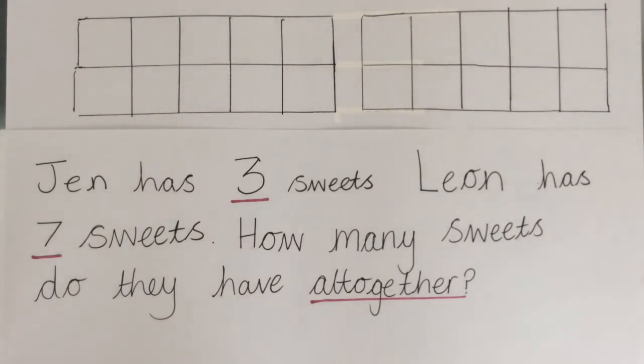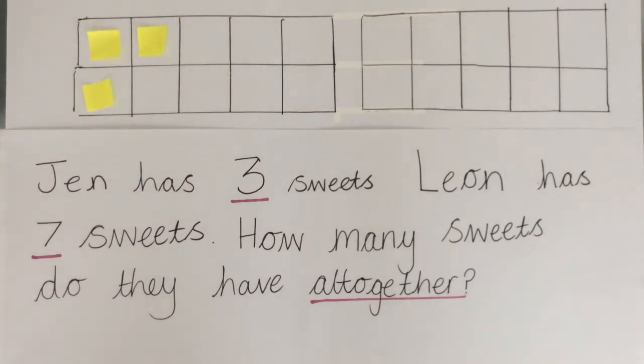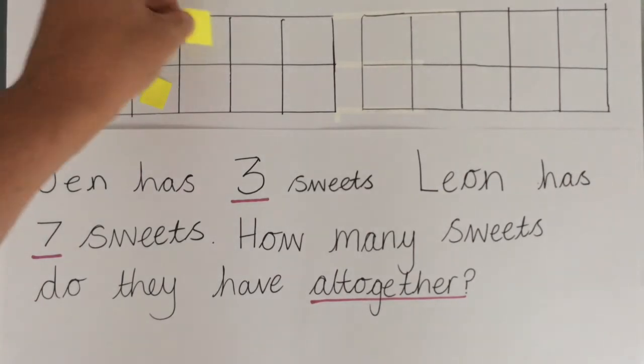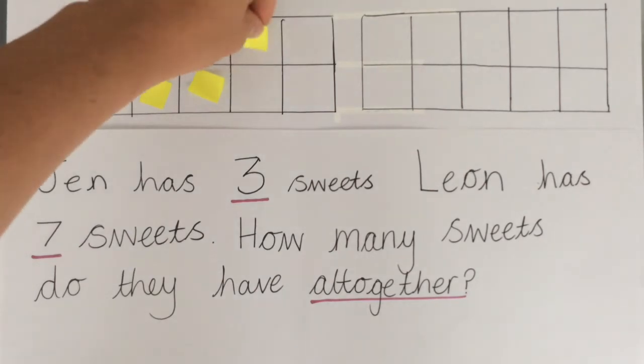So let's start with the largest amount, which is the number seven. So one, two, three, four, five, six, seven.